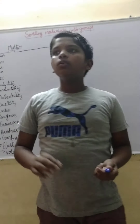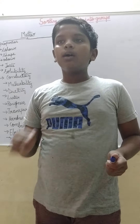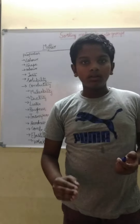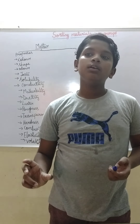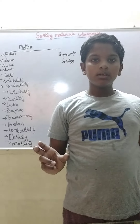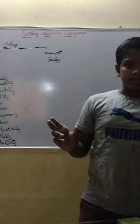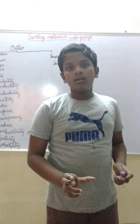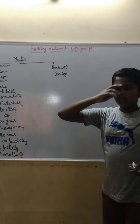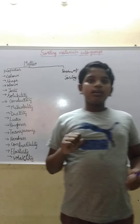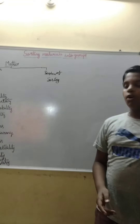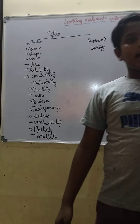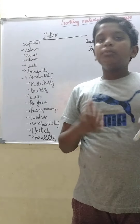Odor. Few materials have a smell, and the smell is known as odor. Some materials smell sweet, others do not smell sweet, and a third group does not smell at all. We can segregate materials by odor — sweet smell in one place, bad smell in another, and no smell in another.